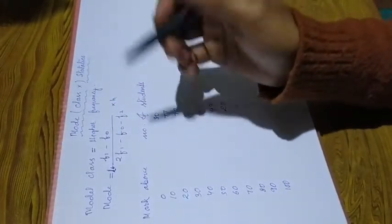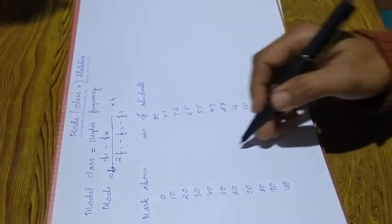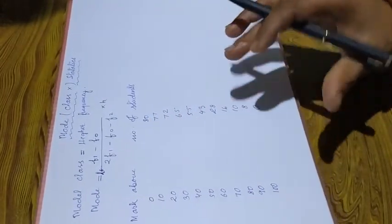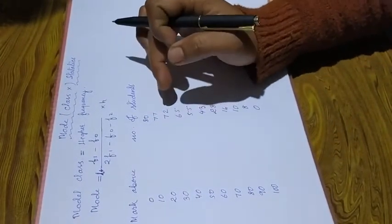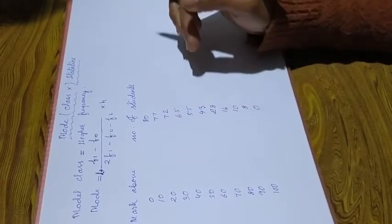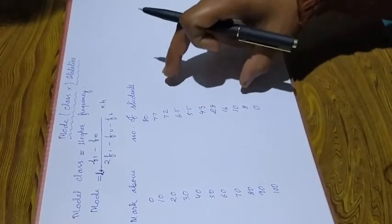Now let's look at an example using a table. The table shows a frequency distribution — the number of students — in the form of grouped data.